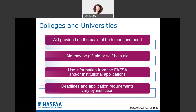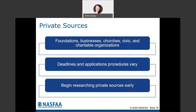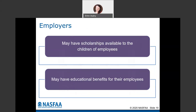In some cases there are also private sources. If the student is a member of a certain foundation, a church, or a charitable organization, they may have different grants or scholarships available. Employers can also be a source — if a parent or student is employed somewhere, there may be scholarships, educational benefits, or tuition reimbursement available. You'd want to check with your employer's HR department to see if there are any opportunities there.